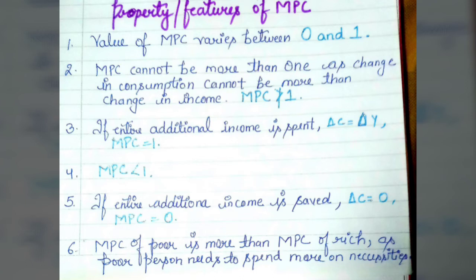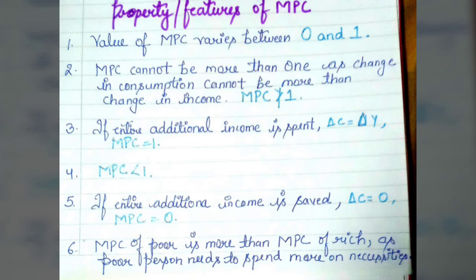The third point is: if the entire additional income is spent, then consumption is equal to income. The sixth point states that MPC of the poor is more than MPC of the rich, because a poor person needs to spend more on necessities.